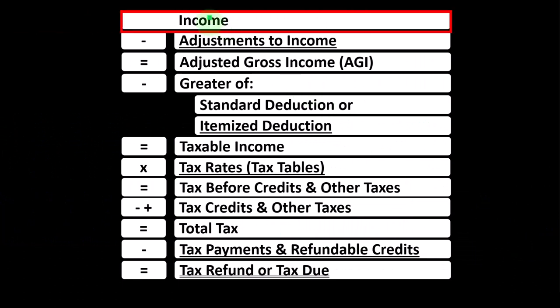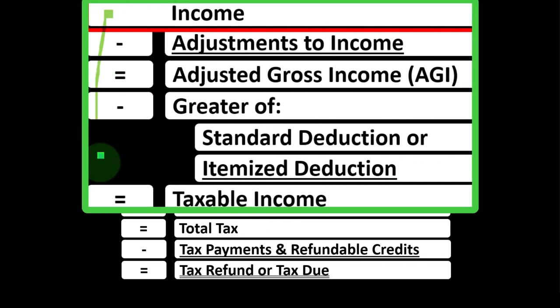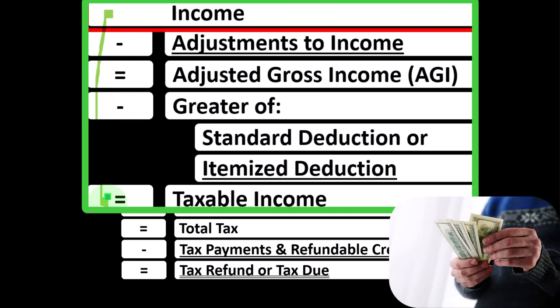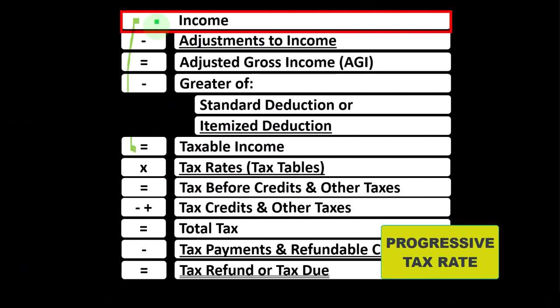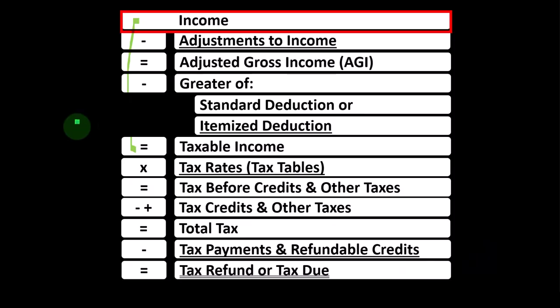Looking at the income tax formula, we're focused on line one income. The first half of the income tax formula is basically a funny income statement — income minus expenses resulting in net income. Here we have income minus various deductions getting to taxable income. With the income line item, we'd like to have it as low as possible for taxes, looking for things that might be exempt from income, and noting that some line items might have more favorable tax rates rather than the standard ordinary income progressive tax rates, such as qualified dividends and possibly long-term capital gains.